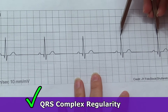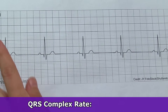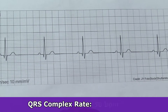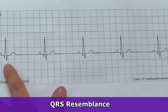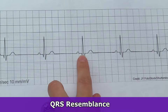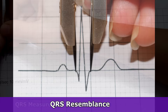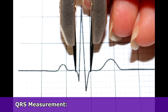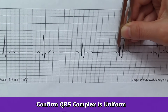Both atrial and ventricular are regular. Then I'm going to count the rate — how many QRS complexes in this six-second strip? We have one, two, three, four, five — five times ten is 50. So we have a ventricular rate of 50, along with that atrial rate of 50. Now I'm going to look at the resemblance of these QRS complexes. We have one QRS complex after each P wave. I'm going to measure from the beginning of the QRS to the end — it should be less than 0.12 seconds. Here it's about three boxes, measuring 0.12 seconds. I'll confirm that this is uniform throughout the rhythm.